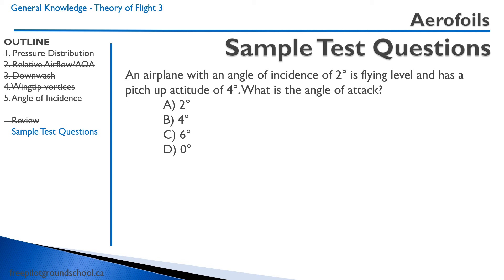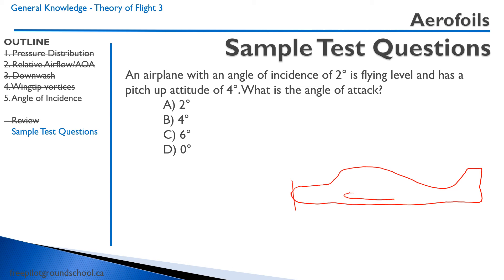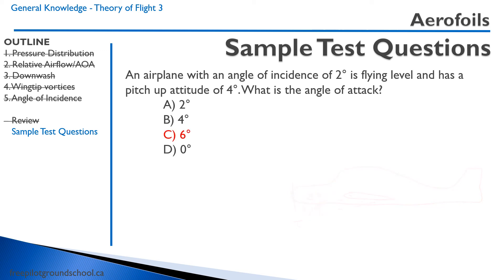Let's draw an airplane to help us solve this. The angle of incidence is 2 degrees, and it has a pitch-up attitude of 4 degrees. We add them together and end up with 6 degrees being the angle of attack.